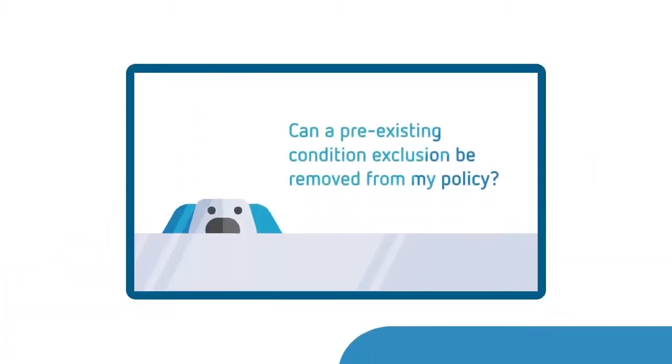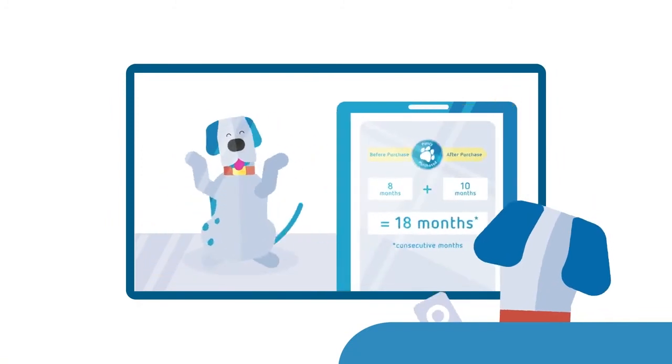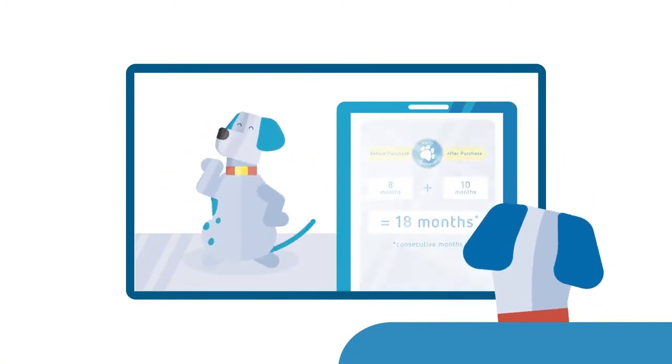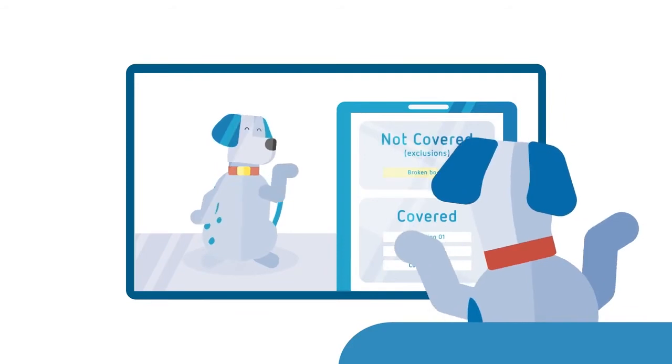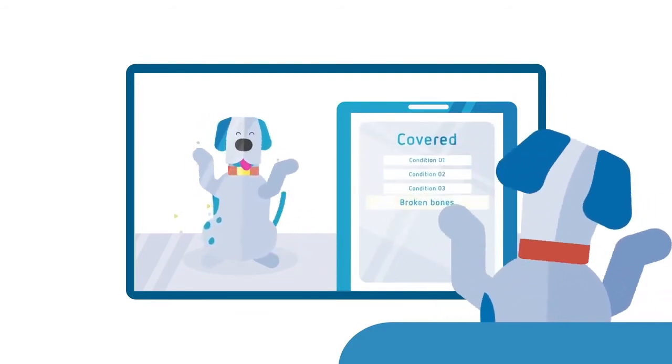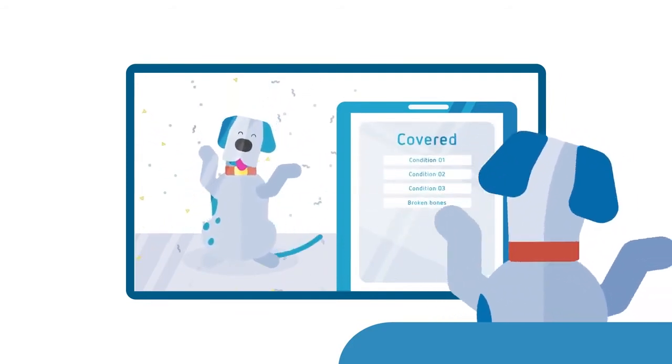As mentioned, all temporary pre-existing conditions are automatically removed from your pet insurance policy as an exclusion if your pet hasn't shown signs or symptoms of that condition for 18 consecutive months or more. So there's nothing more for you to do.